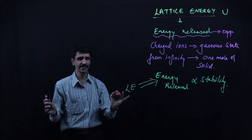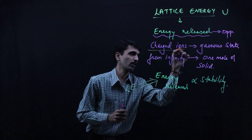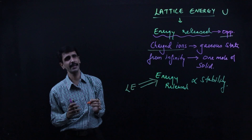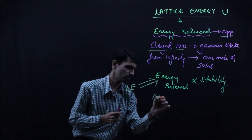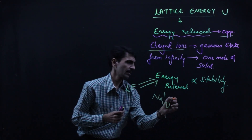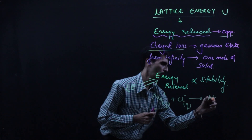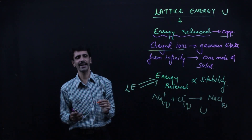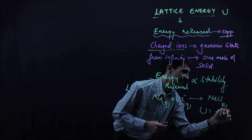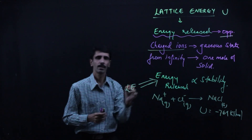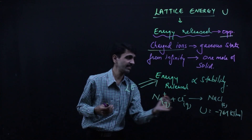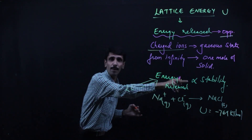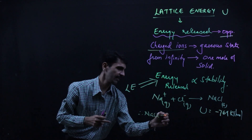I hope the concept is clear till now. Next, as I told you, we consider oppositely charged ions. So for NaCl: Na⁺ and Cl⁻ ions result in the formation of one mole of NaCl in the solid state. If I symbolize lattice energy as U, then the value is −769 kilojoules per mole. The negative sign indicates energy is released, and the high numerical value means high lattice energy.